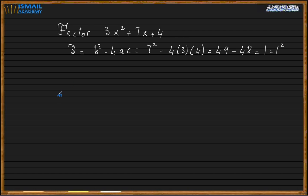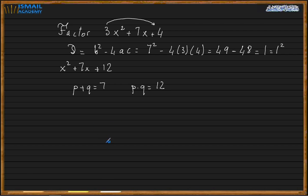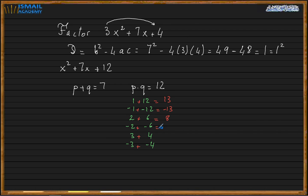I multiply 3 with 4 to get x squared plus 7x plus 12. I look for two numbers P plus Q equals 7 and P times Q equals 12. Checking all factor pairs of 12: 1 and 12 sum to 13; negative 1 and negative 12 sum to negative 13; 2 and 6 sum to 8; negative 2 and negative 6 sum to negative 8; 3 and 4 sum to 7 — that works.